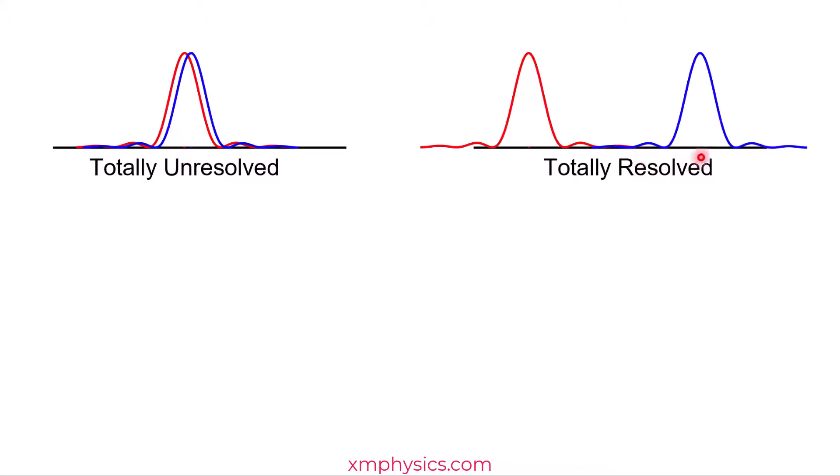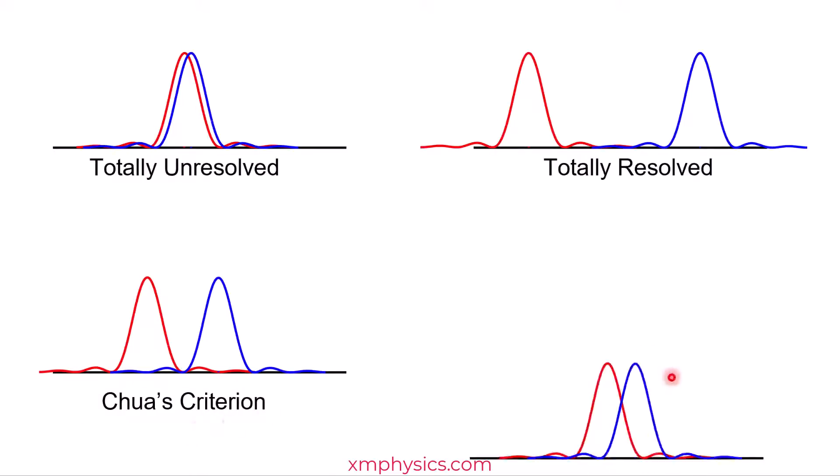So how close can they be before they become unresolvable? If you ask me, I say something like this would be good when this guy's first minima coincides with the other guy's first minimum. Do you agree with me? Well, that would be my criterion, Choa's criterion. But nobody listens to me. Everybody listens to Rayleigh.